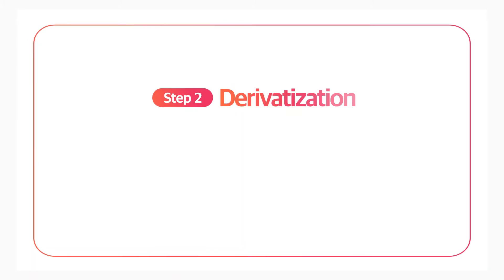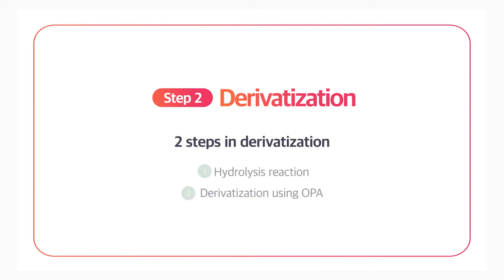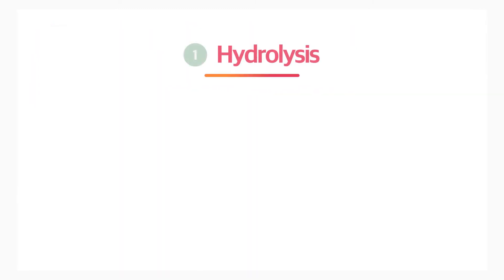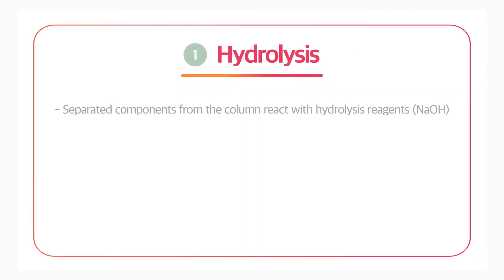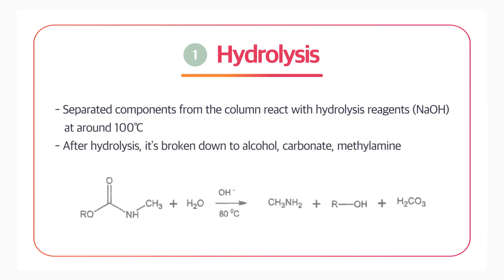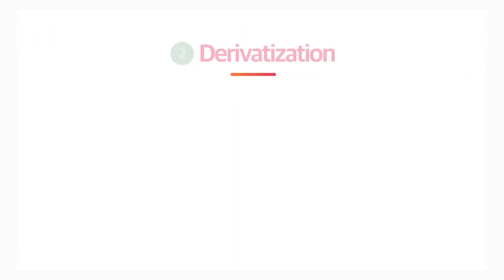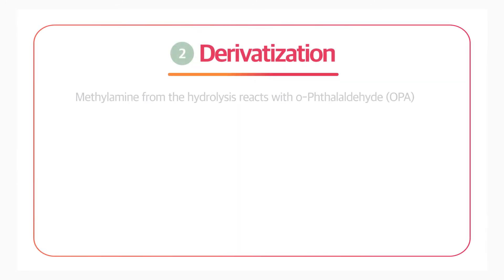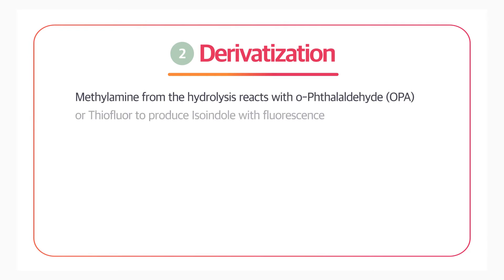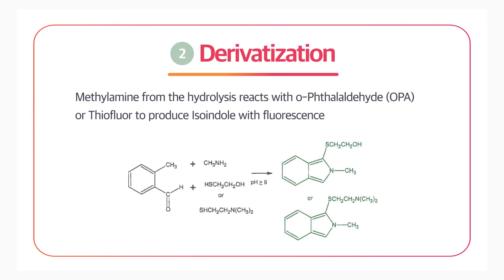After the column eluent, the separated components need to go through hydrolysis first and then fluorescence derivatization. Separated compounds from the column react with hydrolysis reagents at around 100 degrees Celsius. In the hydrolysis, the compounds break down into alcohol, carbonate, and methylamine. In the derivatization process, methylamine from the hydrolysis reacts with OPA, or thiofluor, to produce isoindole with fluorescence.